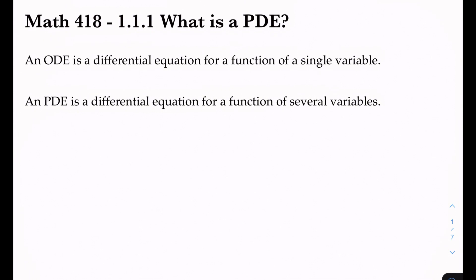The difference between an ODE, or ordinary differential equation, and a PDE, or partial differential equation, is that an ODE is a differential equation for a function of a single variable. So our unknown function u might be a function of t, or it might be a function of x, or something like that, for an ODE.